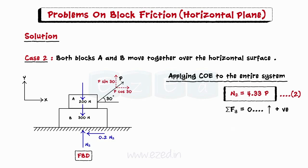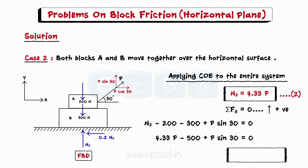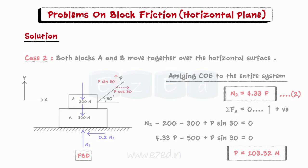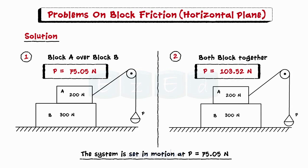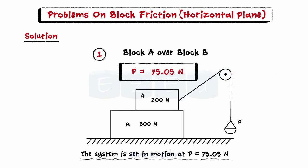Then we equate the summation of all forces in the y direction to 0. On substituting the values and simplifying, we find that the magnitude of applied force P in this case should be equal to 103.52 N. Since the applied force required to move the entire system together over the ground is more than the force required for block A to move over block B, the system is set in motion at P = 75.05 N, with block A moving over block B.